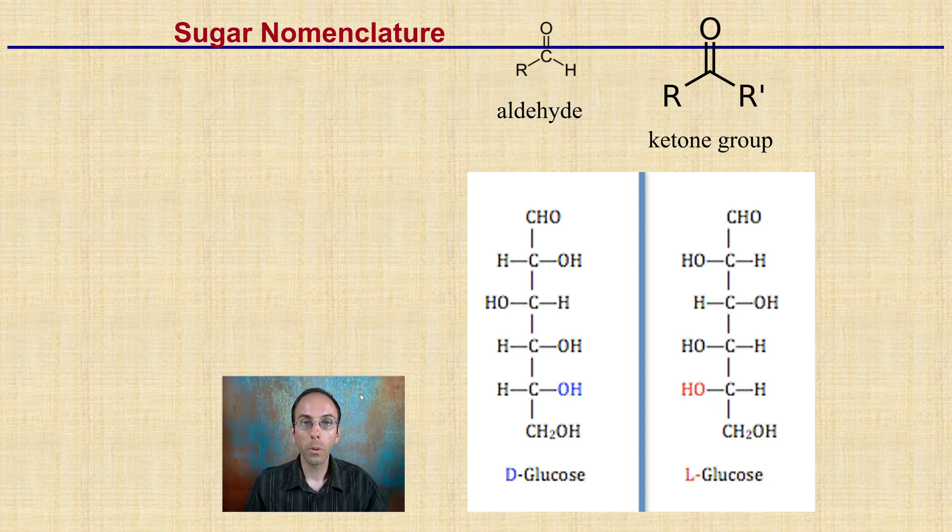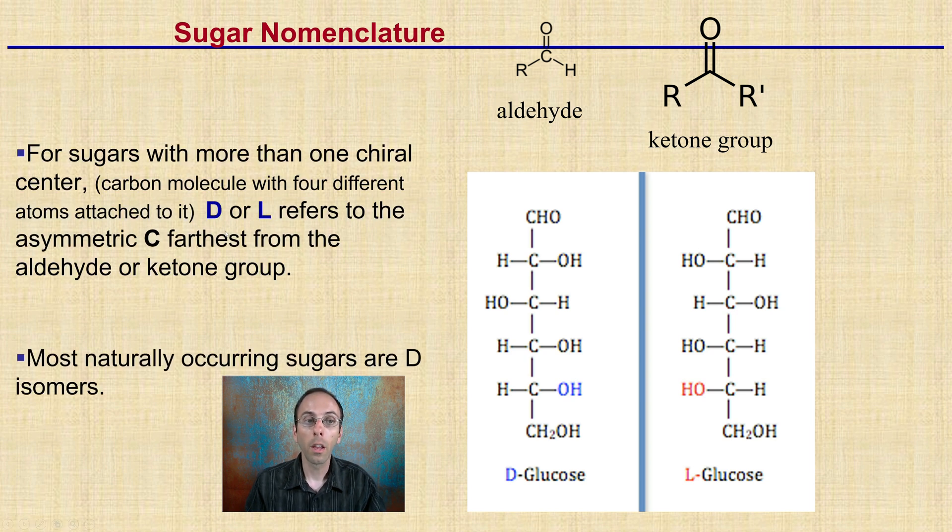Now, within our nomenclature, we have what's called D-glucose and L-glucose. So that's basically referring to the organization of the hydroxide group here. So we're looking at sugar nomenclature. For sugars, more than one chiral center, and I'll talk about chiral centers in a second, it's basically a carbon molecule with four different atoms attached to it. We see the D and the L refers to the asymmetric C, that's the carbon, from the aldehyde or ketone group. We see an aldehyde or a ketone, looking at how these are being arranged. The most naturally occurring sugars are the D-isomers. So our bodies have enzymes that are very dependent on shape, and that D-glucose is something our body might be able to metabolize, where that L-glucose, we may lack those enzymes, so we had to break that down efficiently.